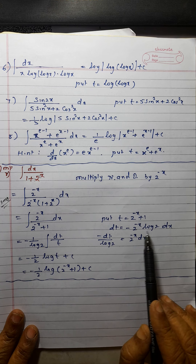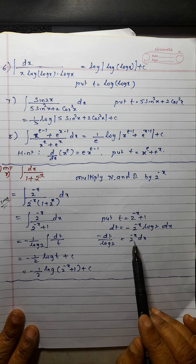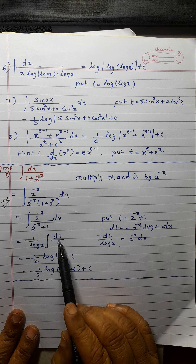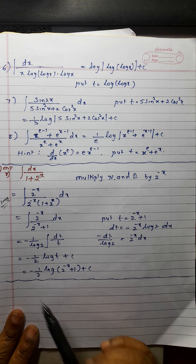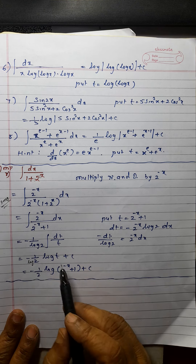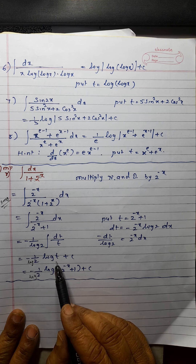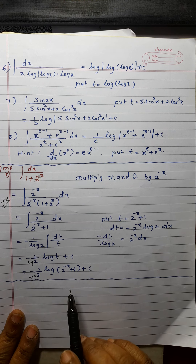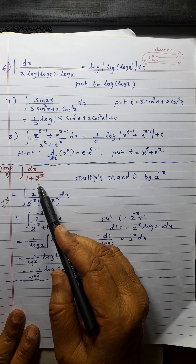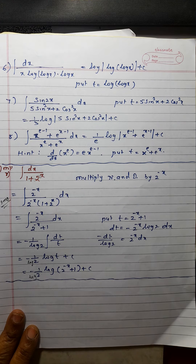The derivative will be 2 raised to minus x log 2 into derivative of this is minus dx. So 2 raised to minus x dx will become minus log 2 — bring it here. So the numerator will be equal to dt divided by log 2 with a negative sign, and this is t. Integration of 1 upon t is log t plus c, giving minus 1 upon log 2 into log t. Substitute t back — this will be the answer. Same method if 5 raised to x, 7 raised to x, or e raised to x is there — multiply by negative index and proceed the same way.